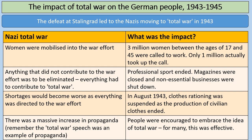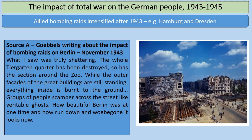Another feature of Nazi total war was that anything not contributing to the war effort was to be eliminated. Professional sport ended, magazines were closed, non-essential businesses were shut down. Shortages became worse as everything was directed to the war effort. In August 1943, clothes rationing was suspended as the production of civilian clothes ended. There was also a massive increase in propaganda — the total war speech itself being a huge example. One of the key impacts for German people was that Allied bombing raids intensified massively after 1943 in places like Hamburg and Dresden, with Goebbels writing about the devastating impact of bombing raids on Berlin.